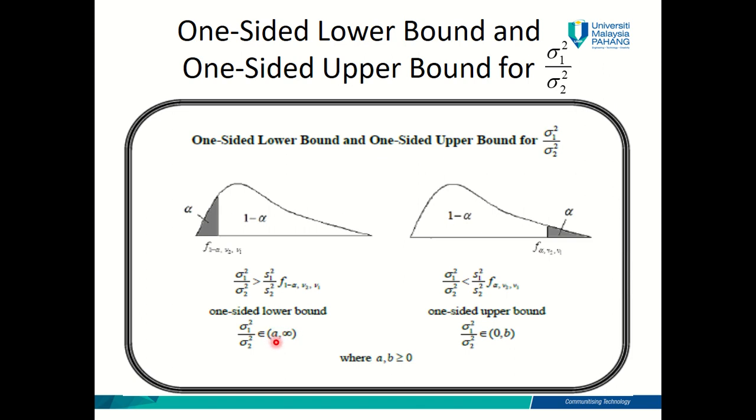Starts from A which is the lower limit and the formula is given here and ends with infinity. Why it ends with infinity? Because variance can be as large as it can be, it can assume whatever value, whatever positive value which is relevant to our variable. And for the one-sided upper bound confidence interval, the confidence interval starts with 0 and ends with B, whereby the formula for B is given at the top here. Why you have to start from 0? Because variance can never be negative. Variance can never assume a negative value. So the smallest possible value for variance is 0.